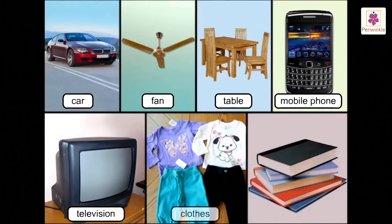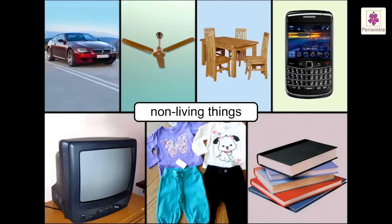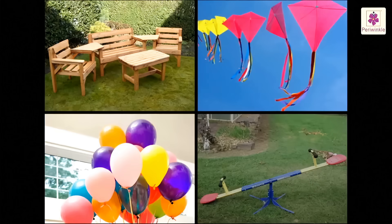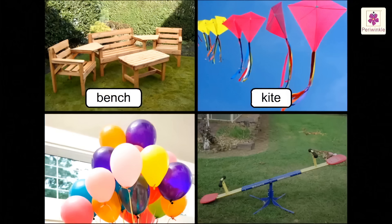eat, grow, move from one place to another, have feelings, produce their young ones and die are called non-living things. For example, bench, kite, balloon and seesaw.